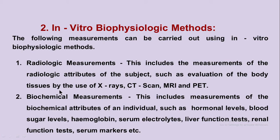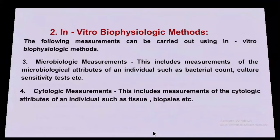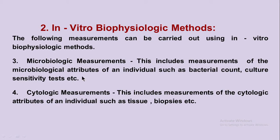Biochemical measurement includes measurements of biochemical attributes such as hormonal level, blood sugar level, hemoglobin, serum electrolytes, liver function test, renal function test, and serum markers like cardiac markers. Microbiological measurements include bacterial count, culture, and sensitivity tests done in the microbiology laboratory. Cytological measurements include tissue culture and biopsies done to find out any abnormal cell growth. These all come under in vitro biophysiological methods.